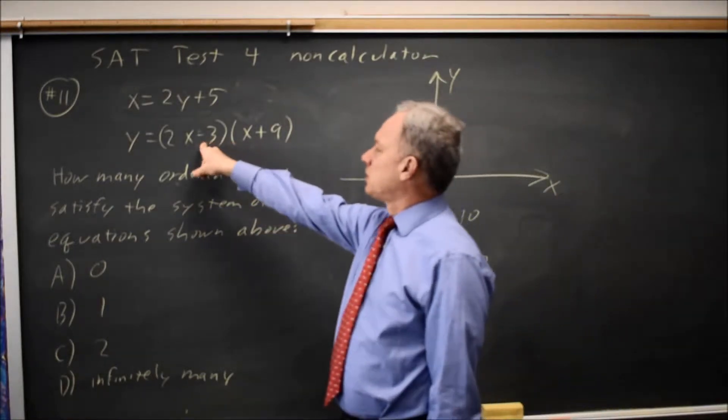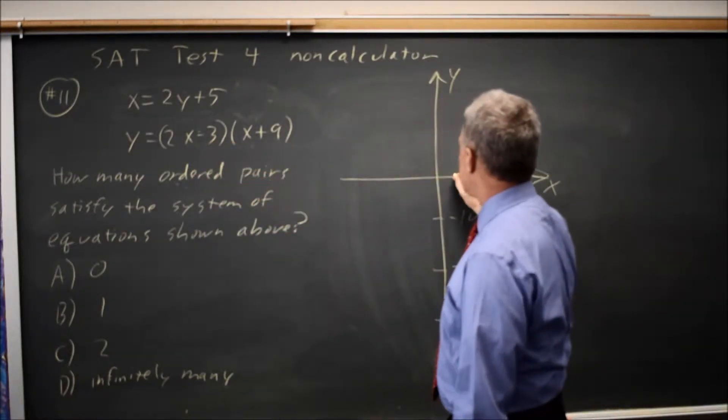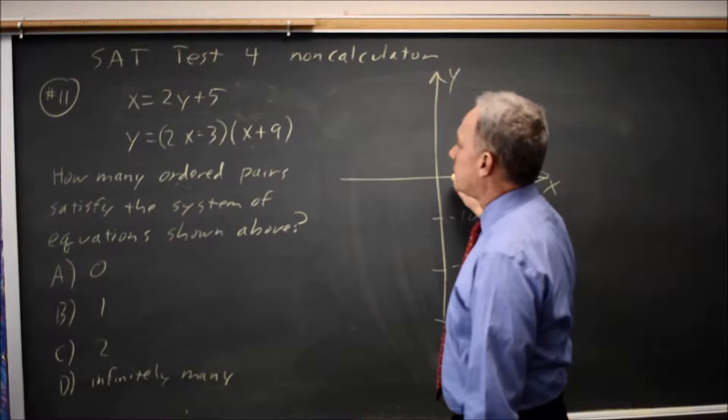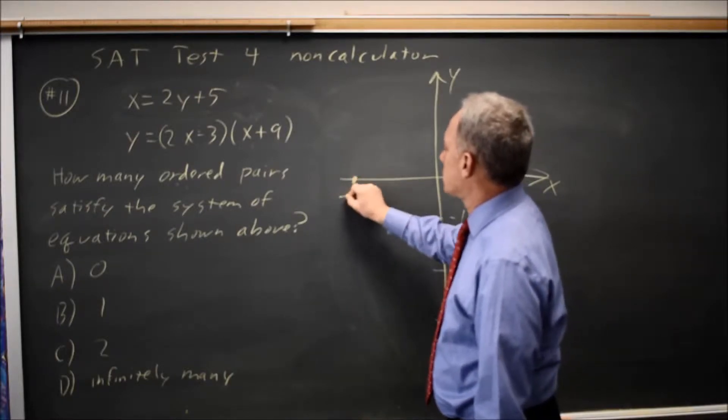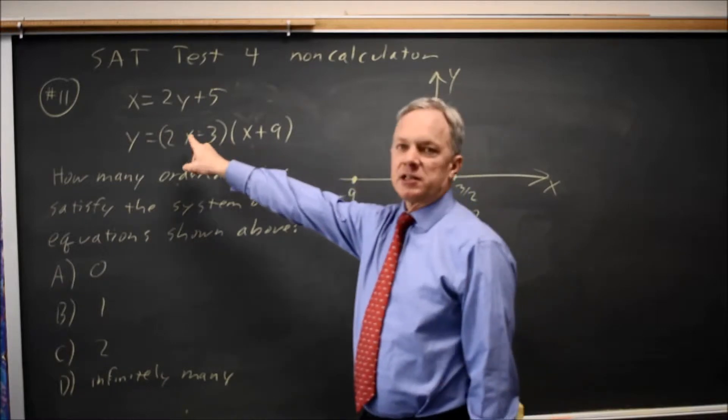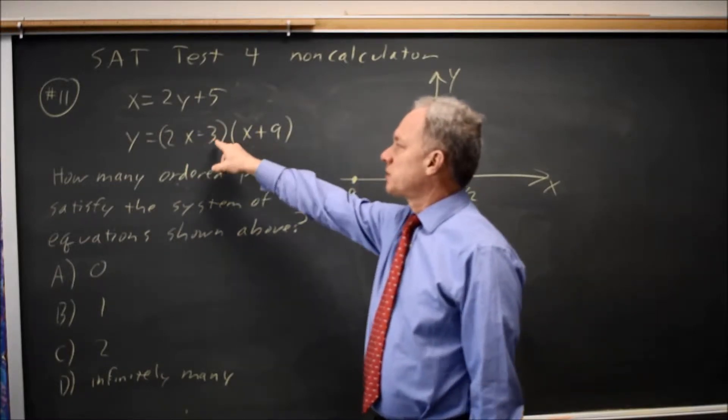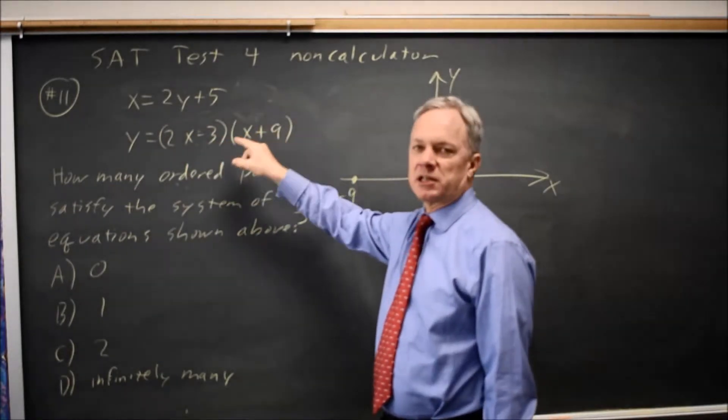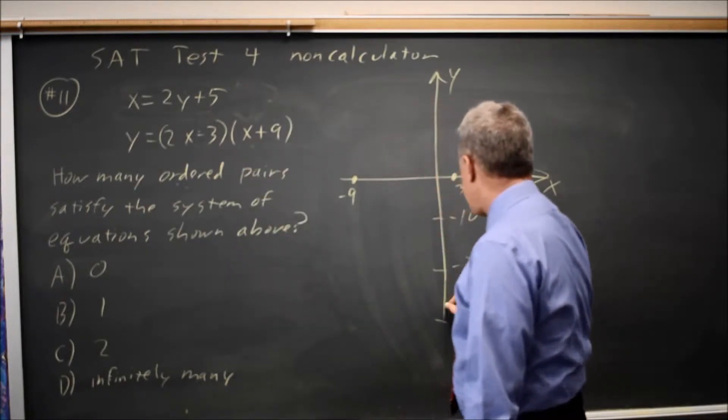Looking at this parabola, I see its x-intercepts are positive 3 halves and negative 9. The y-intercept, when x is 0, 0 minus 3 is negative 3, 0 plus 9 is 9, negative 3 times 9 is negative 27.